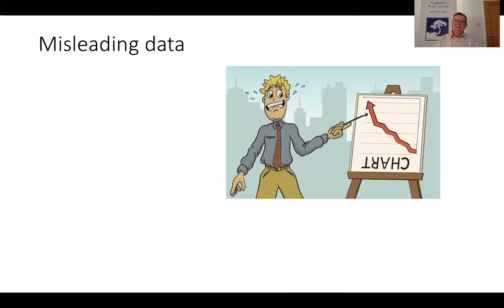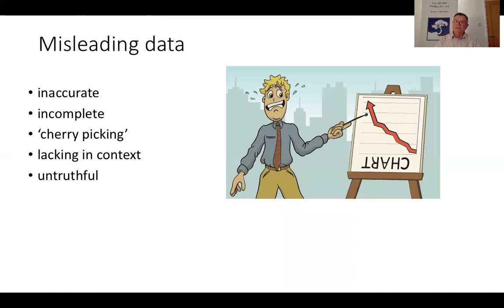Let's move on to misleading data. By misleading, I mean data that is inaccurate or incomplete. It involves cherry-picking — taking the data that supports your point of view and ignoring the rest. It can also be lacking in context, or it might just be untruthful. We've got an awful lot of data around at the moment because of COVID-19. I don't really like to introduce this subject, but it is a very rich source of data — and a lot of it is misleading, some inaccurate, and a lot taken out of context.